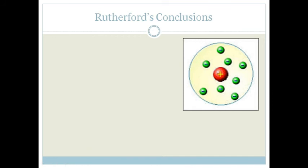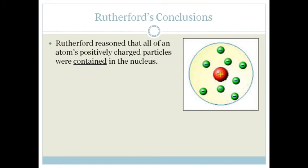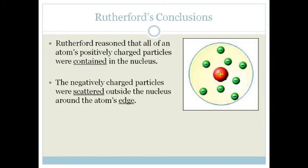So Rutherford's conclusions were, obviously, the atom is mainly made of space. That he reasoned that all of the atom's positively charged particles were contained in a nucleus. And the negatively charged particles were scattered outside the nucleus around the atom's edge.